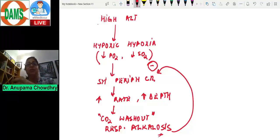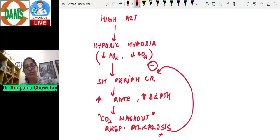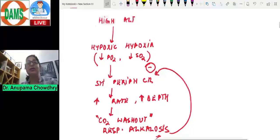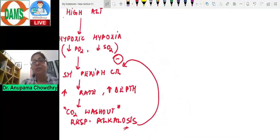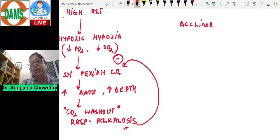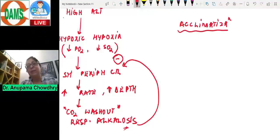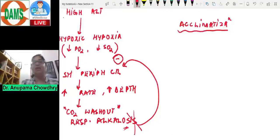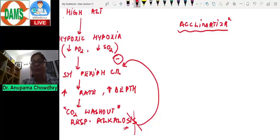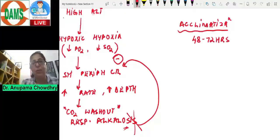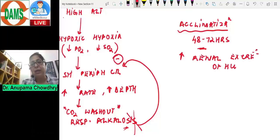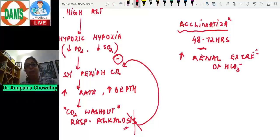To overcome this, acclimatization takes place. There is increased renal excretion of bicarbonates to correct the alkalosis, so hypoxia can continue to stimulate the respiratory drive. The time taken for acclimatization is about 48 to 72 hours. Other acclimatization changes include increased secretion of erythropoietin to increase red cell mass and hemoglobin, thereby increasing oxygen carrying capacity.